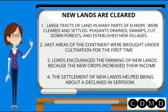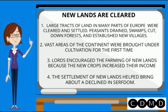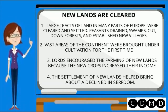New lands are cleared. Large tracts of land in many parts of Europe were cleared and settled. Peasants drained swamps, cut down forests, and established new villages. Vast areas of the continent were brought under cultivation for the first time. Lords encouraged the farming of new lands because the new crops increased their income.